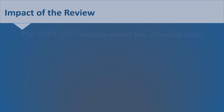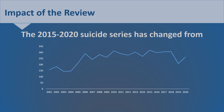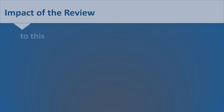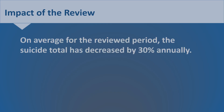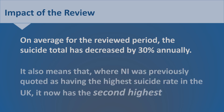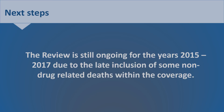Impact of the review: The 2015 to 2020 suicide series has changed. This means that on average for the reviewed period, the suicide total has decreased by 30% annually. It also means that where Northern Ireland was previously quoted as having the highest suicide rate in the UK, now it has the second highest. The review is still ongoing for the years 2015 to 2017, due to the late conclusion of some non-drug-related deaths within the coverage.